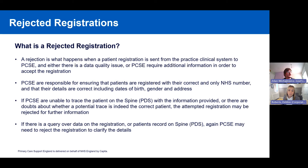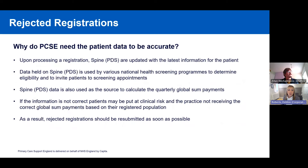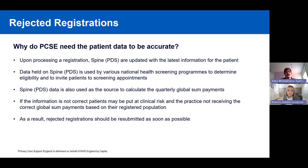PCSE need the data to be accurate because historic information can be confused with the latest information. The data held on Spine is used for various national health screening programs to determine eligibility and invite patients to screening appointments, so it's vital that addresses are correct so letters go to the right place. Spine data is also used to calculate quarterly global sum payments, and if information is not correct, patients may be put at clinical risk and practices may not receive the correct global sum payments.